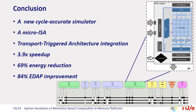In conclusion, we introduced a cycle-accurate simulator along with a micro-instruction set architecture. We integrated the simulator into a transport-triggered architecture. By assessing the system, we observed a 3.9x speedup over LOTTA. Energy consumption decreased by 69%, and most importantly, the energy-delay-area product improved by 84%. Thank you for your time.